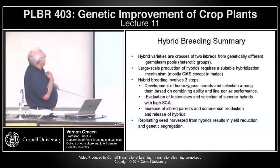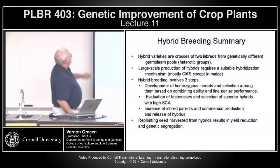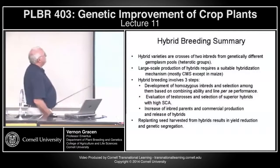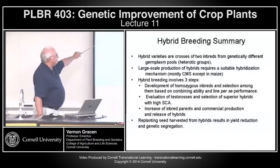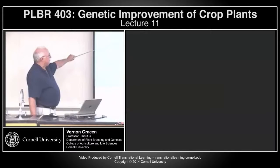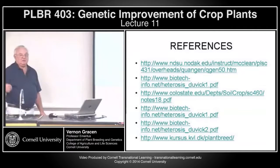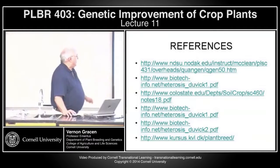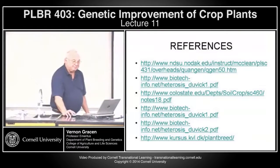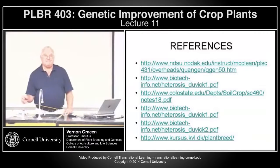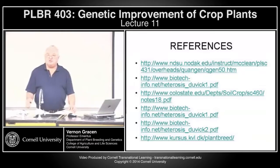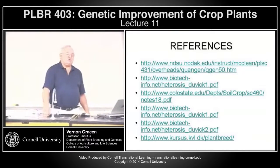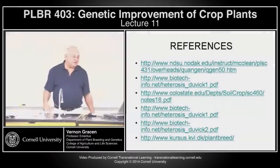So in summary for hybrid breeding: varieties are crosses of two inbreds; large-scale production requires a mechanism such as CMS or detasseling. It involves three steps: develop inbreds, evaluate test crosses and select hybrids, then increase and distribute. The replanting of hybrid seed doesn't do the farmer much good. We'll talk about a lot of these concepts again when discussing public versus private breeding programs, because private breeding programs were really fostered by the development of hybrids.